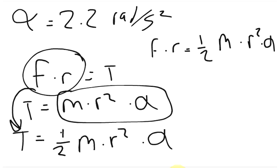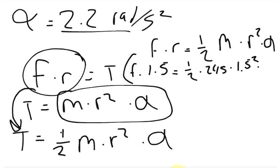And we said that the angular acceleration is 2.2. So the force times the radius of 1.5 equals 1 half the mass of 245 times the radius squared of 1.5 squared times 2.2.